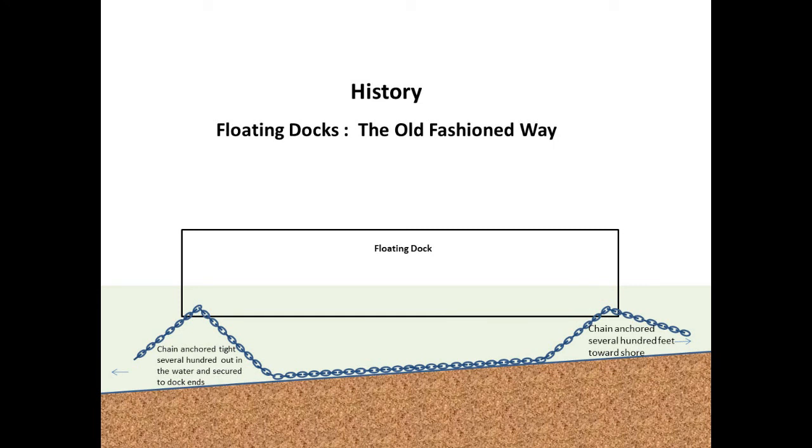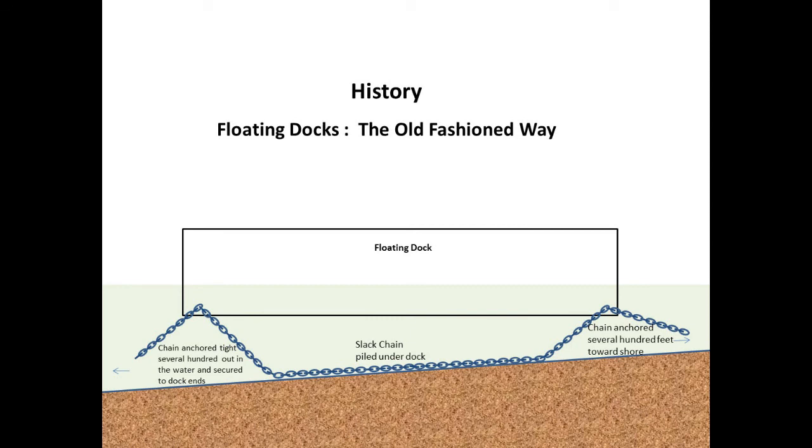Then the slack is pulled out with about 50 to 60 pounds of chain tension, and then the chain is secured to the bottom of the other end of the dock. The excess chain is just left in a pile under the dock.